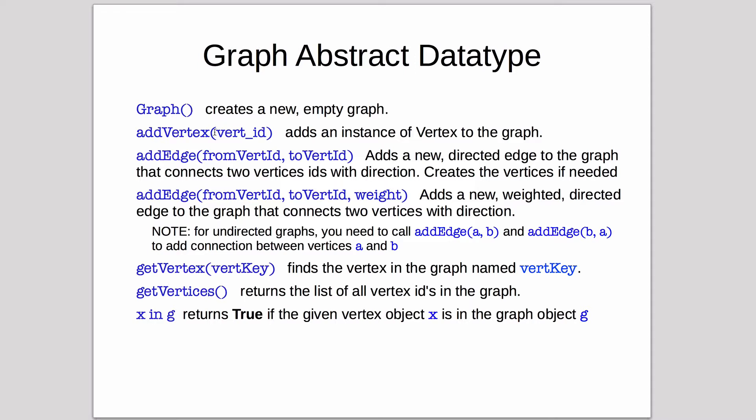It can call addVertex and give it an ID or key for the vertex, which adds a vertex to the graph. More conveniently, it can add an edge from one vertex ID to another. If those IDs are not already in the graph, it will add them. So you can just use addEdge to add both edges and vertices.